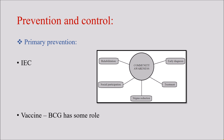Let us talk about the prevention and control of leprosy. First, primary prevention — the steps taken prior to the onset of disease to prevent its development. One major component is IEC, that is Information, Education, and Communication, for generating awareness among the people. Adequate community awareness ensures early diagnosis and early initiation of treatment, preventing further progression of the disease. If deformities have already taken place, there is scope for rehabilitation. Community awareness also reduces stigma and misconceptions, ensuring social participation of patients.